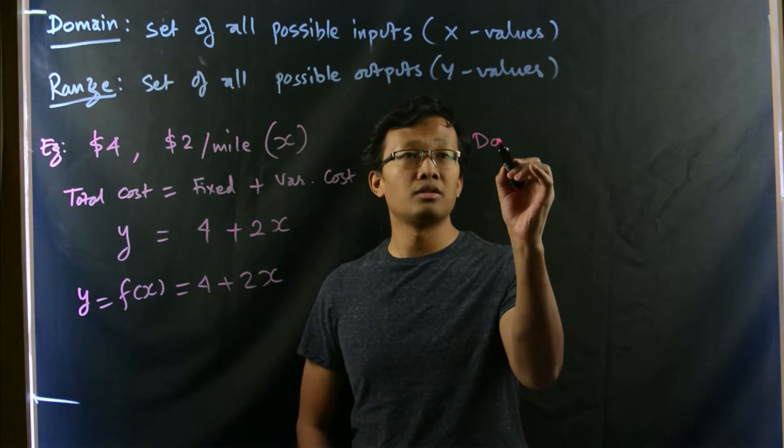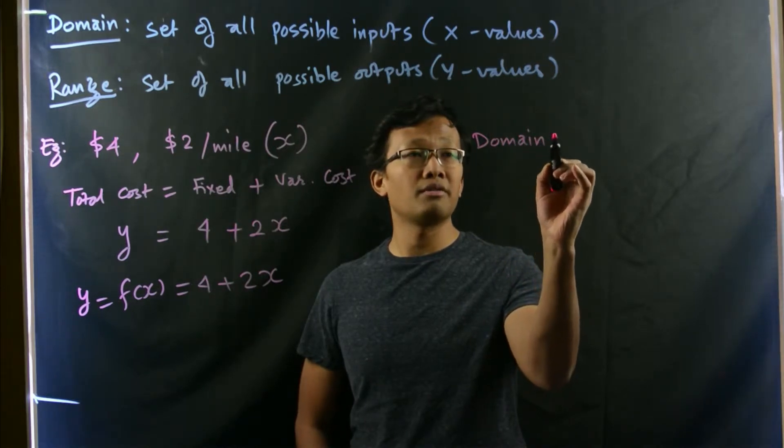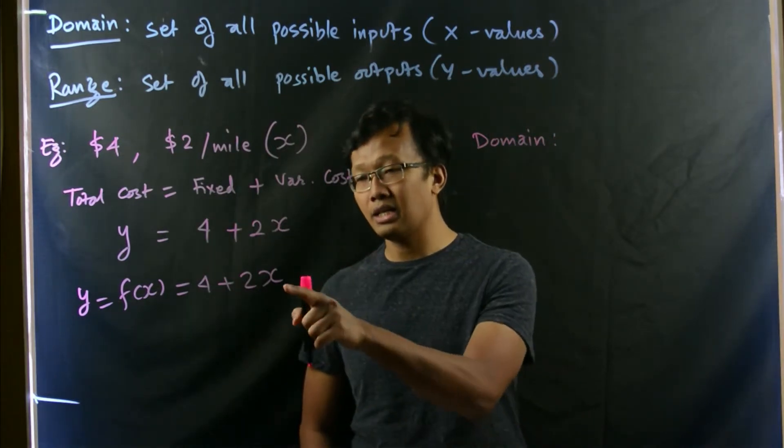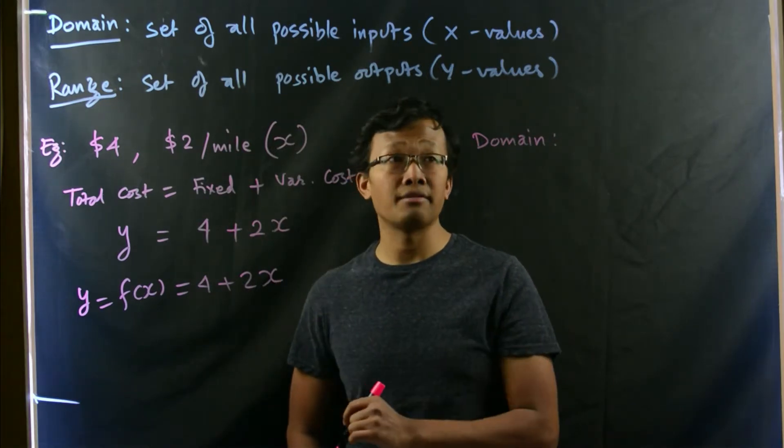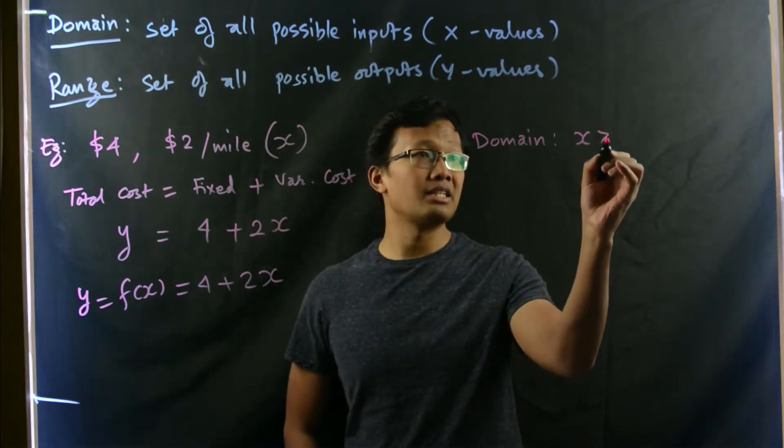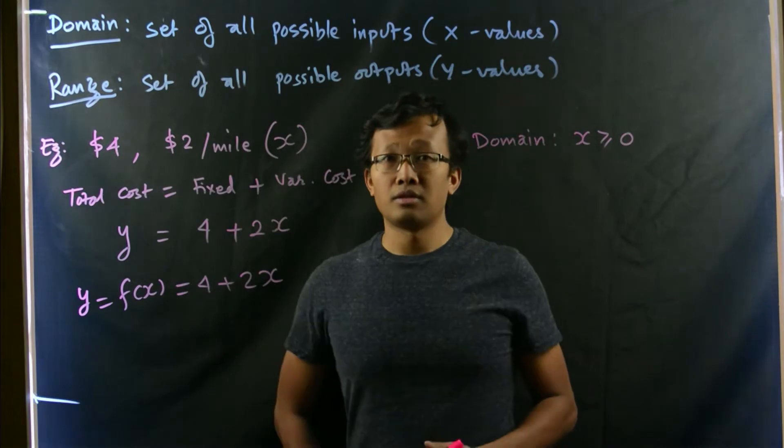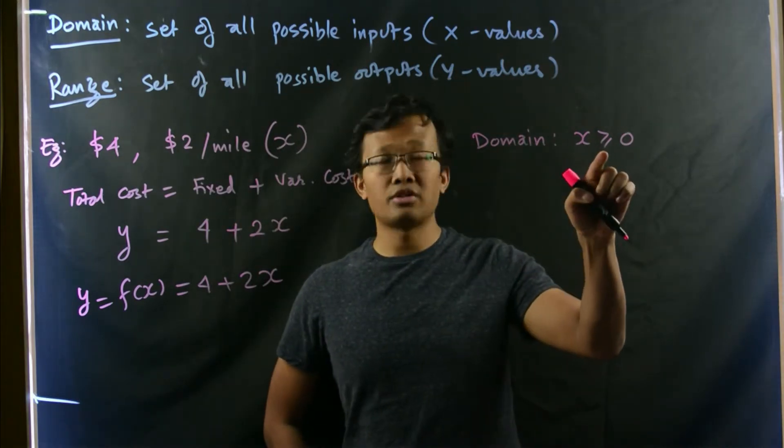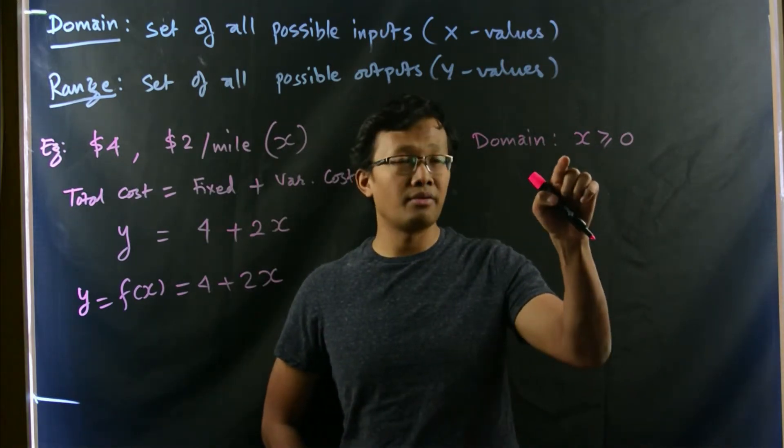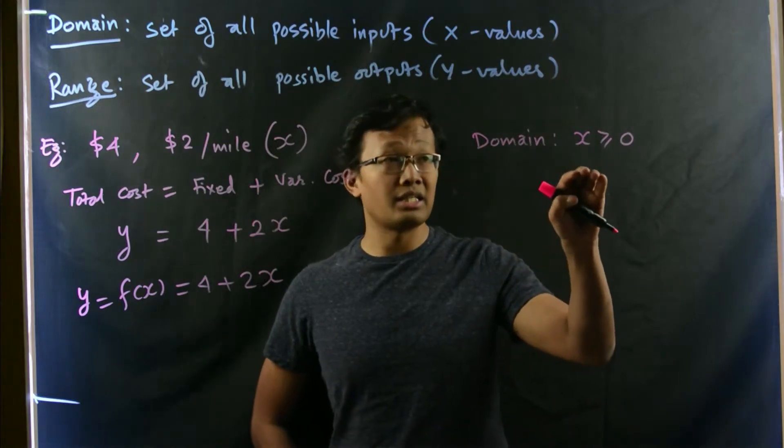Domain would be simply all the values that x can choose or x can have. So, it would be simply x is greater than or equal to 0. No matter what, if you don't travel, but you have already rented a taxi, that means you will be liable to pay $4.